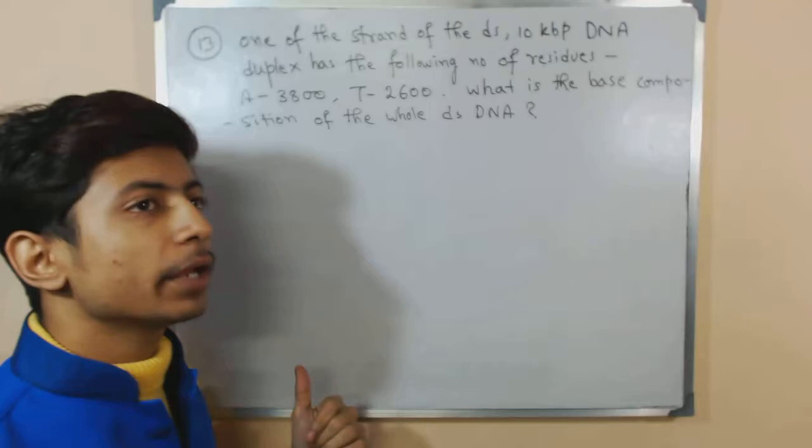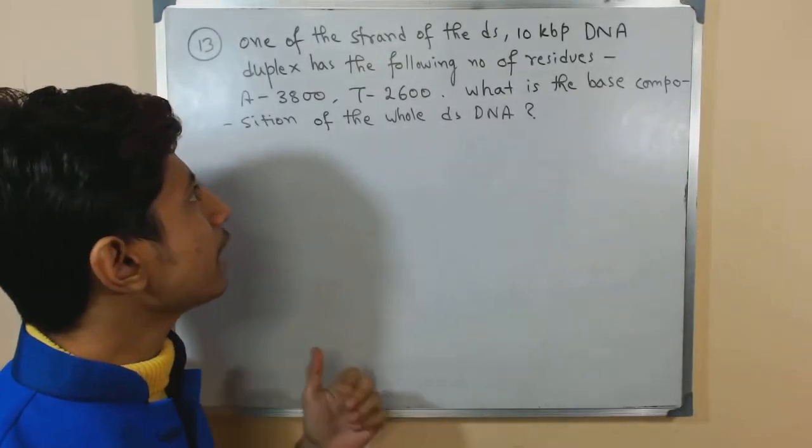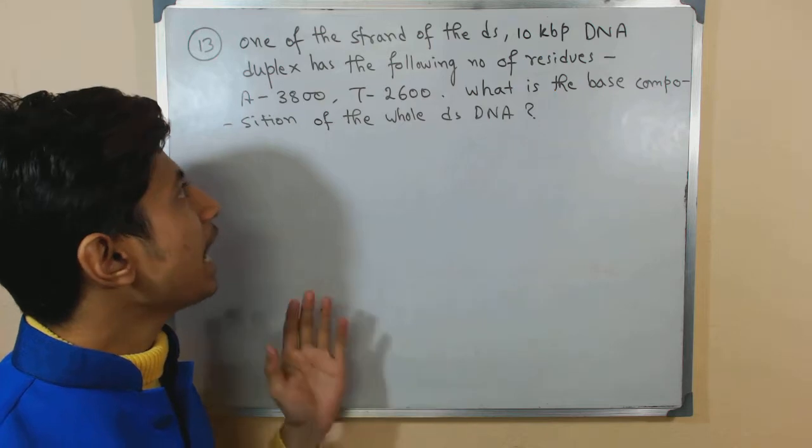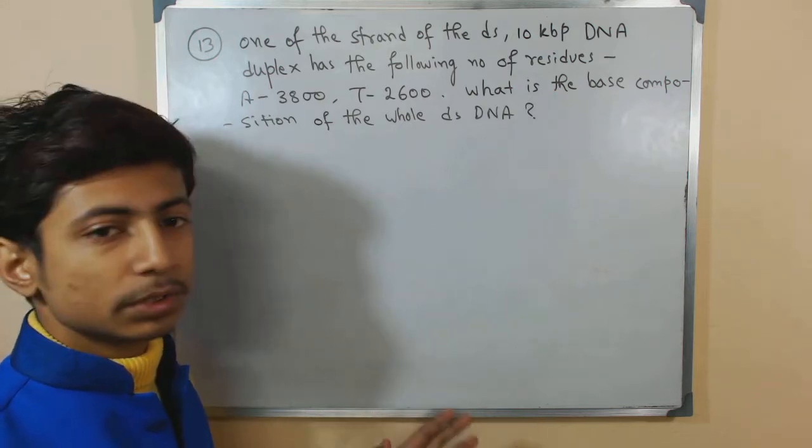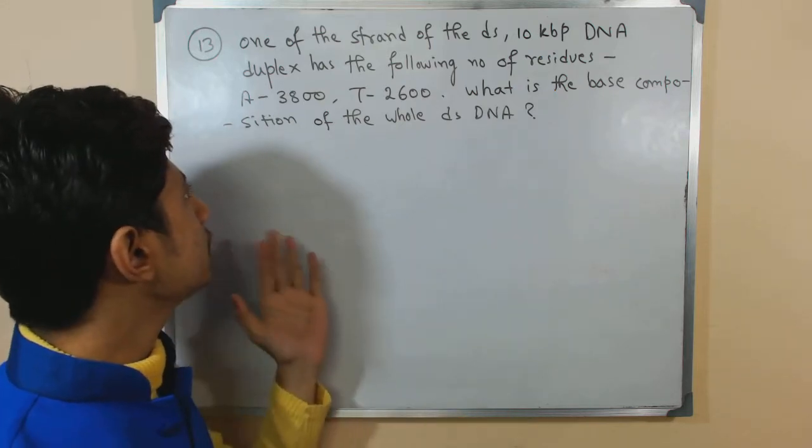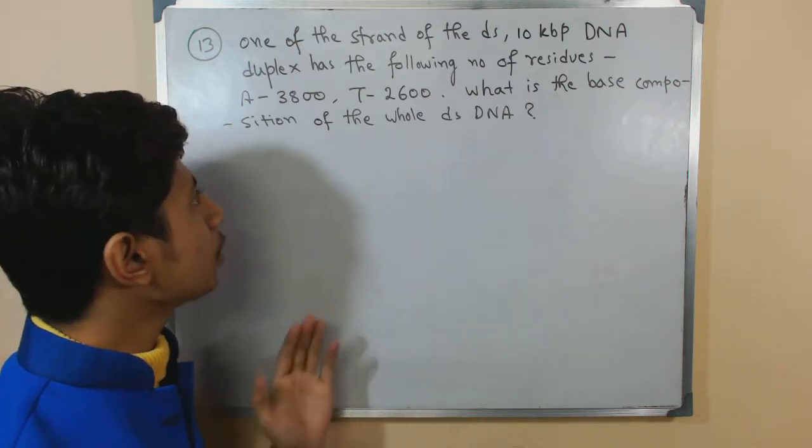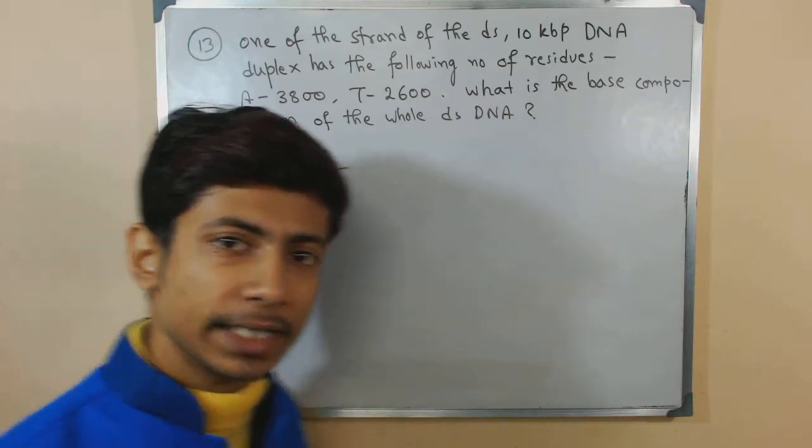Let's begin with this question. It says that one of the strands of the double-stranded 10 kbp DNA duplex has the following number of residues: adenine is 3800, thymine is 2600. What is the base composition of the whole double-stranded DNA?